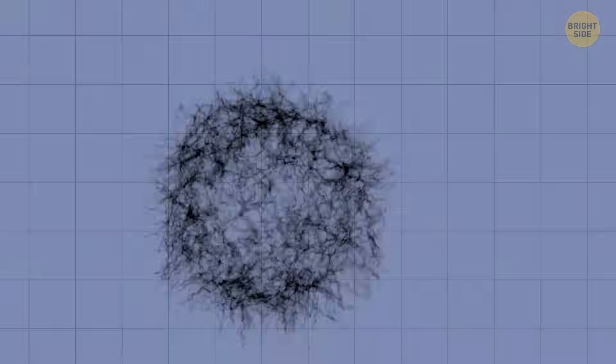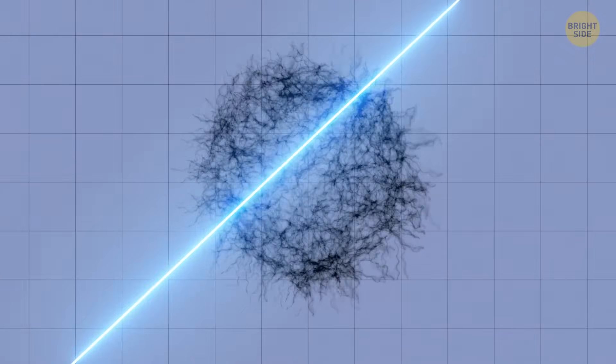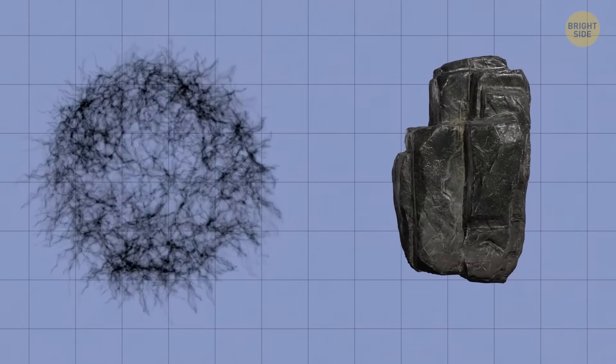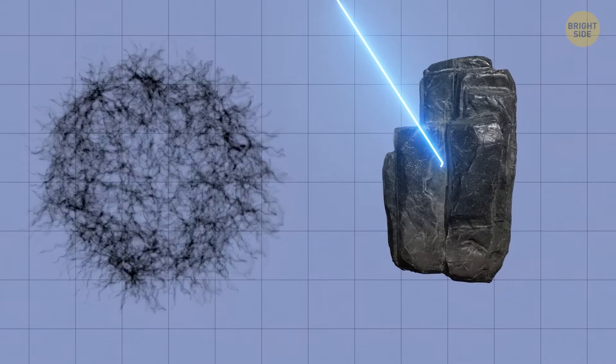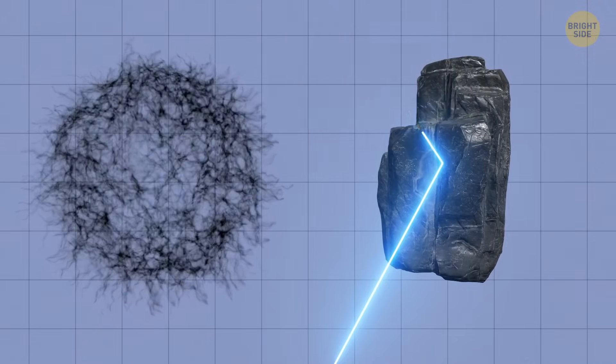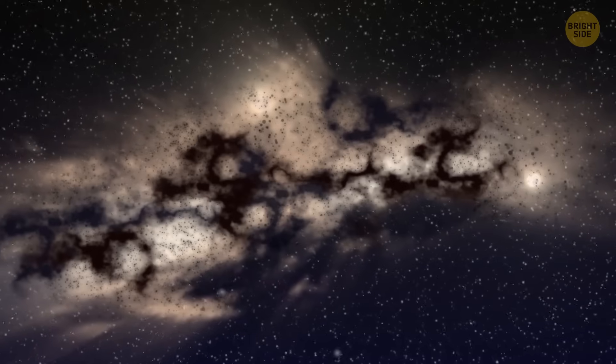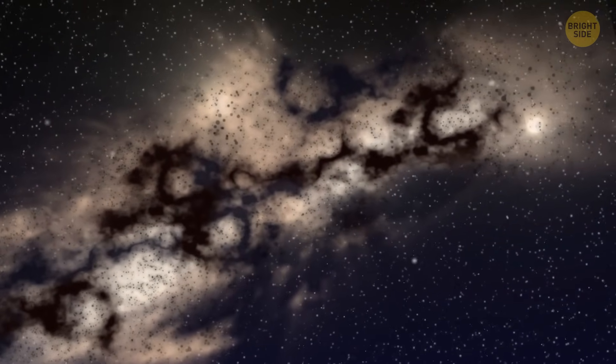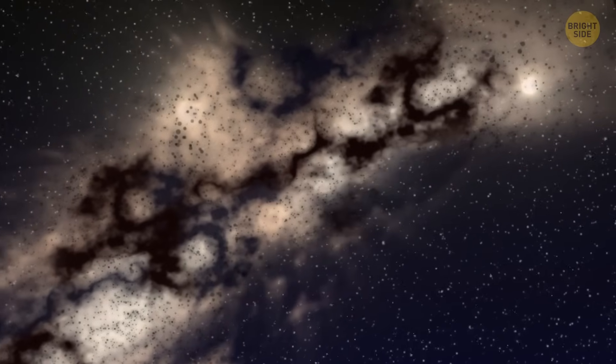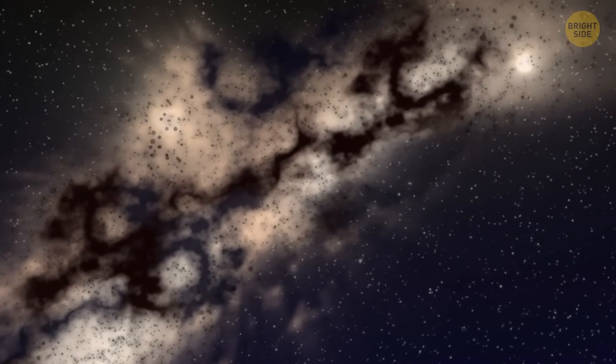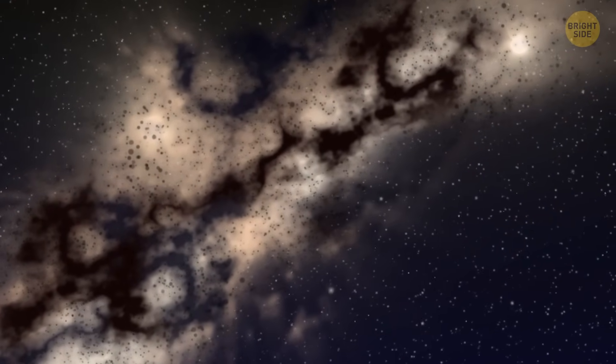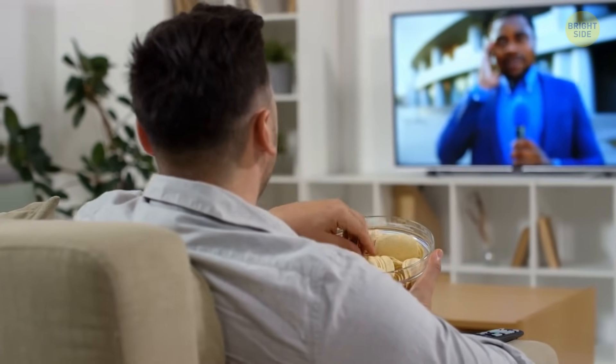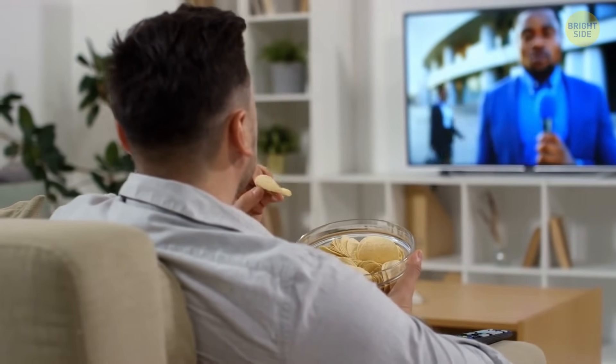The reason why dark matter is invisible to us is that it doesn't emit, absorb, or reflect light. Regular matter, all the things that surround us, absorb some light waves and reflect others, which makes us see them in different colors. But dark matter particles don't do that, so we have no idea what this substance looks like. And as we mentioned, it's probably super light. So because of this, it interacts very weakly, if at all, with normal matter. It could pass right through you and your walls, and nothing would happen. No friction, no heat generation, no sound.